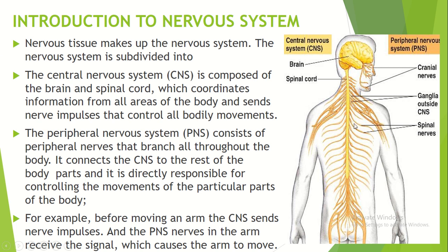The Central Nervous System coordinates information from all areas of the body and sends nerve impulses that control all the body — all the movements, all the commands, and all the functions in the body. To connect the CNS to the different parts of the body, the Peripheral Nervous System helps.